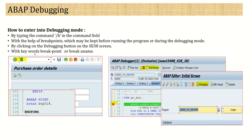One more option is with the help of ABAP keywords. You can write the keyword BREAKPOINT, or the second option is BREAK followed by a space and then the username. The difference is that BREAKPOINT is a hardcoded breakpoint that gets triggered for all users, whereas BREAK followed by a username only gets triggered when that specific user is logged in.